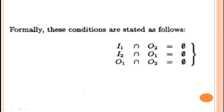Formally, these three conditions are known as Bernstein's conditions. The input set I is also called the read set, and the output set O is called the write set. In terms of data dependencies, the Bernstein condition implies that two processes can execute in parallel if they are flow independent, anti-independent, and output independent. The parallel execution produces the same results regardless of whether they execute sequentially or in parallel, because the output of one process will not be used as input to the other.